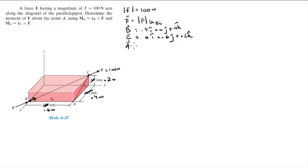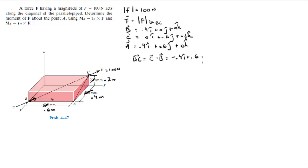A sits at 0.4i + 0.6j + 0k. Vector BC is given by C minus B, and it comes out to be −0.4i + 0.6j + 0.2k. The magnitude of vector BC is given by the square root of the x-component squared plus the y-component squared plus the z-component squared, and the magnitude comes out to be 0.748.